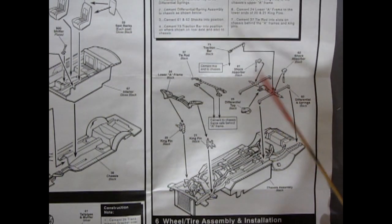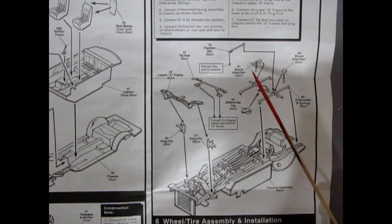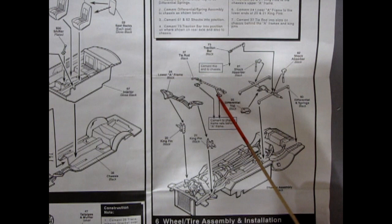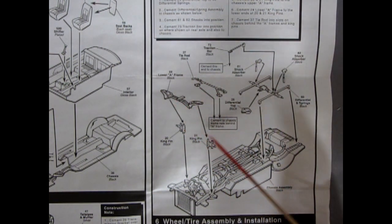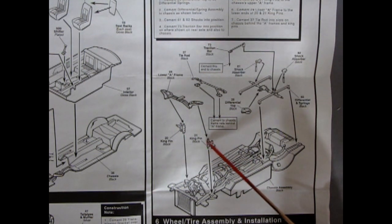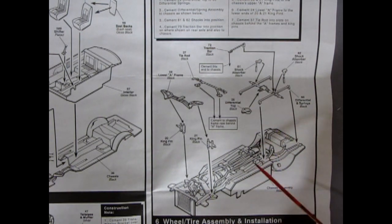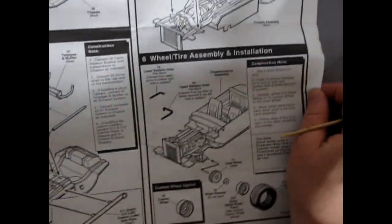And then we go into our front suspension assembly, front and rear. So we've got traction bars going on to the back, shock absorbers, differential top. Then our tie rods, lower A-frames, the spindles as well as the springs in here. And then going into our upper A-arms, which are part of the chassis and frame assembly.